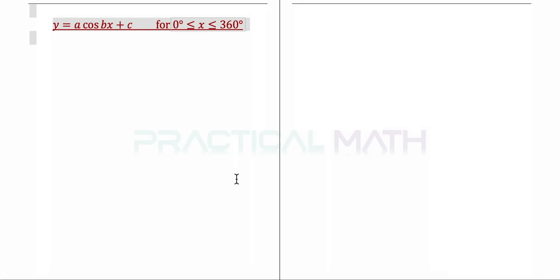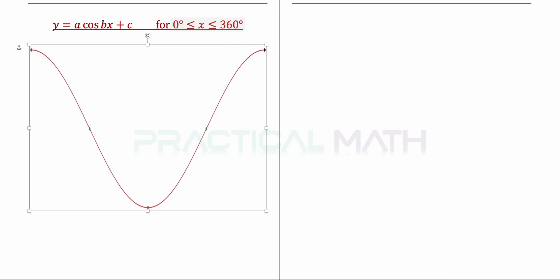In the general form a·cos(bx) + c: a refers to the amplitude, b is the coefficient of x and is related to the period, and c is the center. For the default shape of a cosine curve, you start with the maximum, end with the maximum, and in the middle you go down to the minimum. In between the maximum and minimum are the center points.